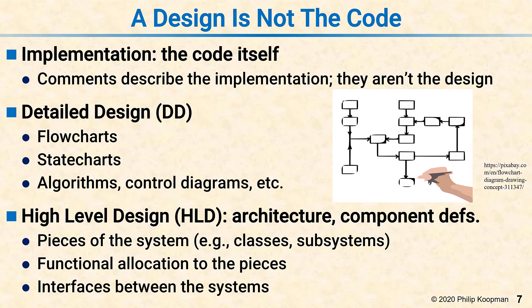So usually, high level design is boxes and arrows, and each box is a thing, and the arrows tell you how they relate to each other. It also typically includes network message definitions and interfaces to the outside world.